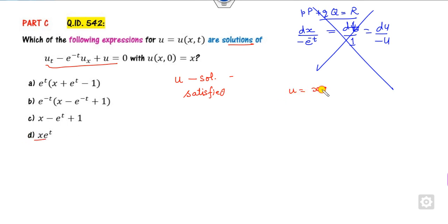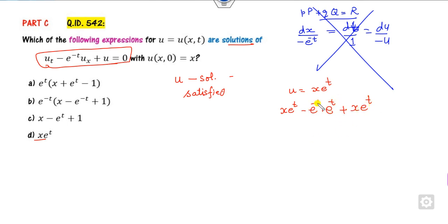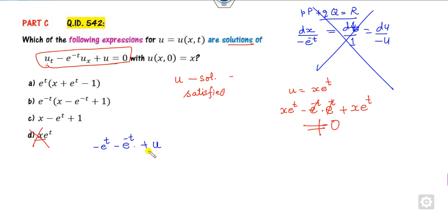For option a, if u equals x e raised to power t, substituting gives the partial derivative with respect to t equal to x e raised to power t, plus u, which does not equal 0 — so option a is not correct. For option c, substituting gives minus e to the t minus the partial derivative with respect to x equal to 1, plus u, which also does not equal 0 — so that option also cancels.